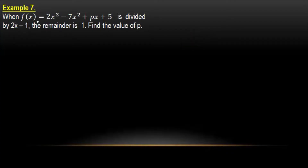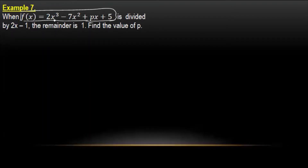When 4x is divided by 2x minus 1, find the remainder. We multiply our values and the amount 4x is given.